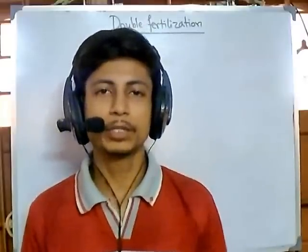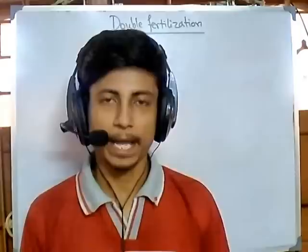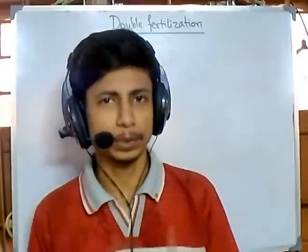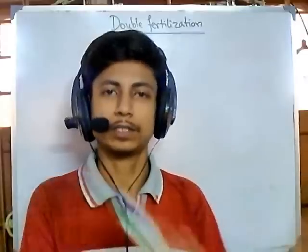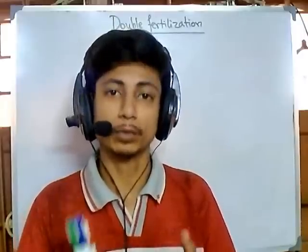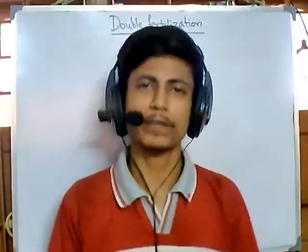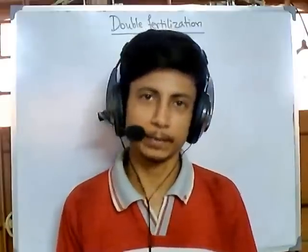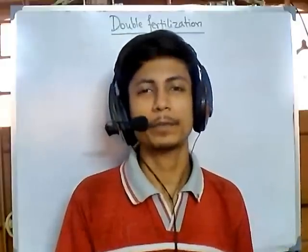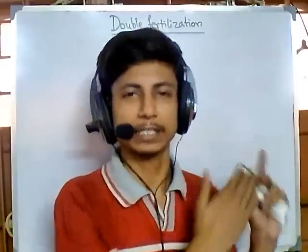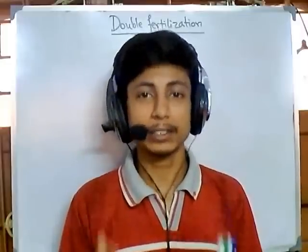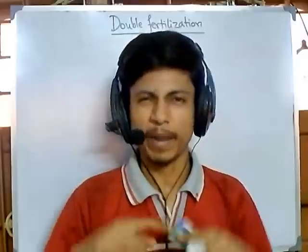Welcome back. In this video tutorial we'll be talking about double fertilization, which occurs in plants. It's a unique thing because in all other organisms, fertilization means the attachment of sperm with egg and fusion of sperm pronucleus with egg pronucleus, producing a 2n chromosome zygote. In plant reproduction, however, fertilization occurs twice — that's why it's termed double fertilization.